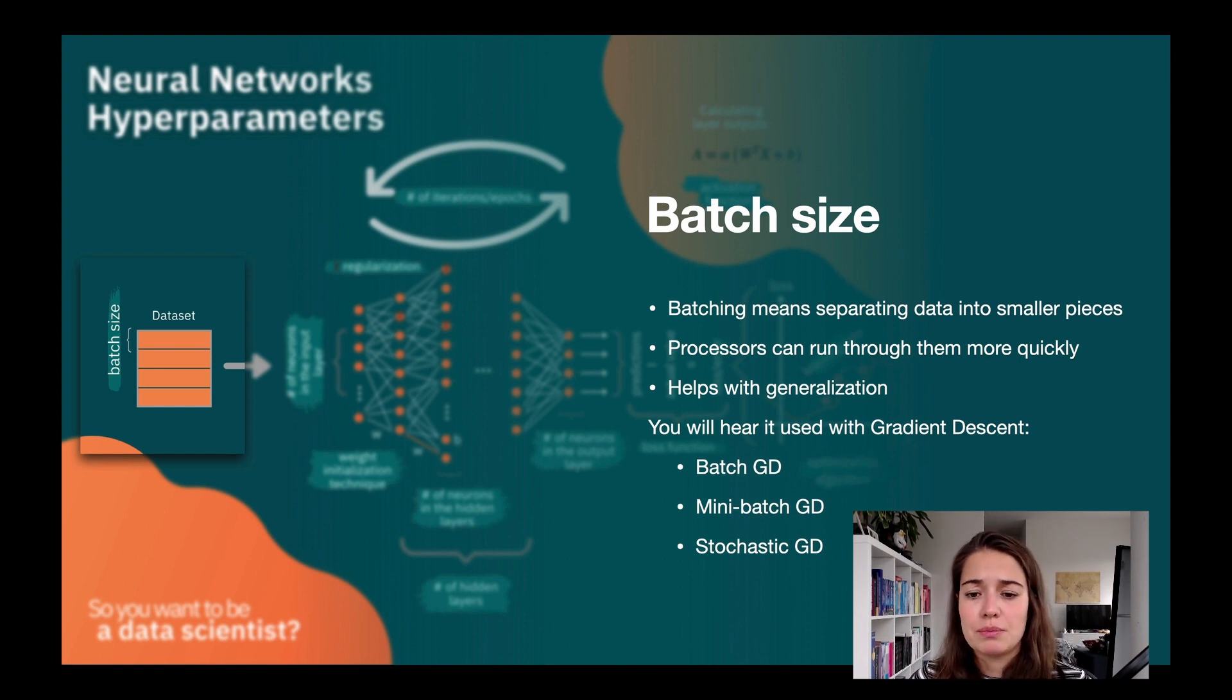These things are actually very simple. Batch gradient descent means before you do the gradient descent step, which is updating the weights and biases, you will do that learning step only after the whole data set has been run through the network. So one batch is the whole data set, basically. Mini-batch is anywhere between having one data point in our batch to having all of it, so anywhere in between that.